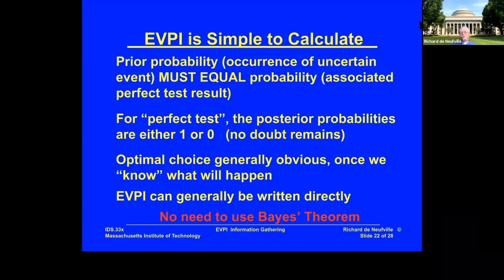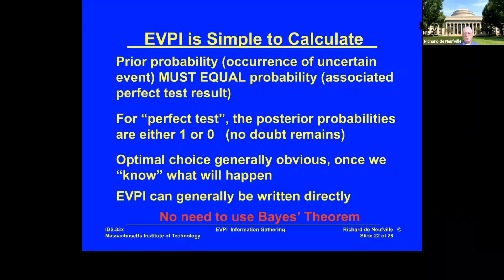The nice thing about the EVPI is that it's simple to calculate. The prior probability must equal the probability of the perfect test result. Once you've run the perfect test, the posterior probabilities are either zero or one — either this happens or it doesn't, no doubt about it. Once you know there's a probability of one, you know what you're going to choose, and you can write the EVPI formula directly — there's no need to use Bayes' theorem.